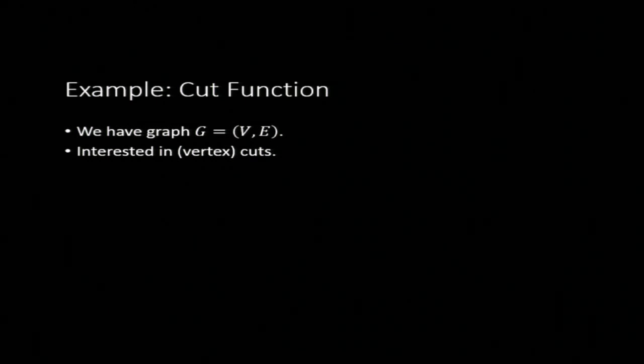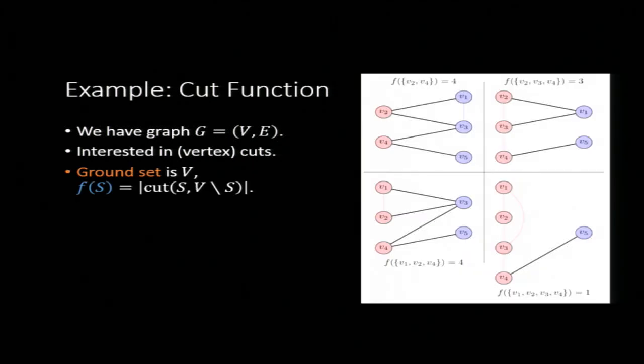So let's take a closer look at one such function this captures. This is the cut function. Let's imagine this case where we have a graph that we're interested in with vertices and edges, and we're interested in particular in vertex cuts of this graph. Based on the definition of the previous slide, the ground set of elements is going to be our set of vertices. And our function F is going to map subsets of these vertices into their cut values. So in particular, if you look at the top left of this diagram, F of V2 and V4 is just four edges, which is the number of edges crossing this cut.